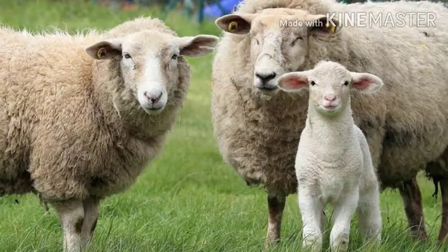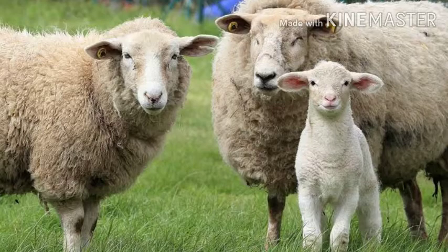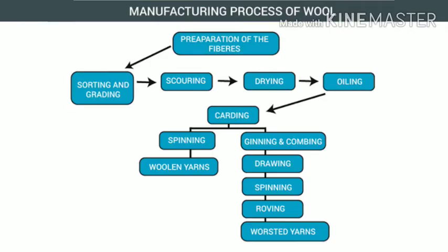Good morning. Today we will discuss the topic of how wool is obtained from sheep. Wool is obtained from the sheep by a long process which involves the following steps: shearing, scouring, sorting, dyeing, combing, and spinning. Now we will discuss all these steps for obtaining wool one by one.